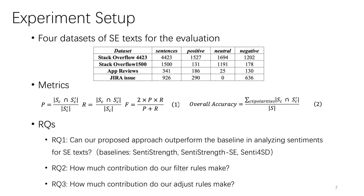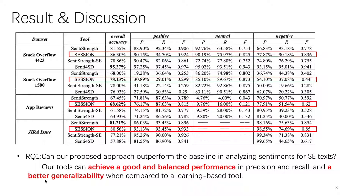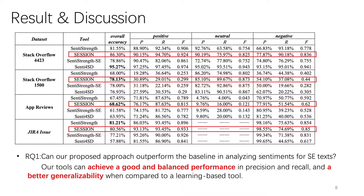For RQ1, the table shows the performance of the four approaches. We found that the tools developed for SE texts, SentiStrengths SE and Senti4SD, can often achieve higher precision on sentiment tests but suffer from low recall. Tools developed for social texts, like SentiStrengths, can often achieve higher recall but suffer from lower precision. In contrast, our tool achieves a good and balanced performance in precision and recall, and better generalizability when compared with the learning-based tool.